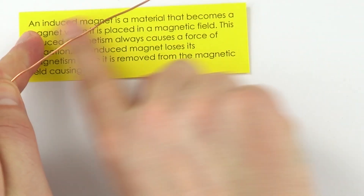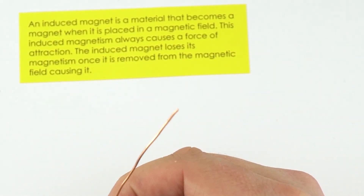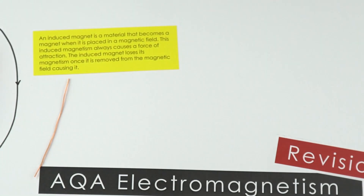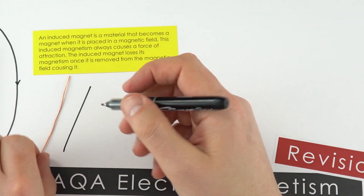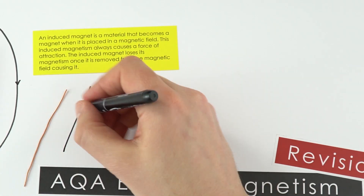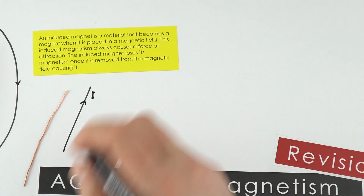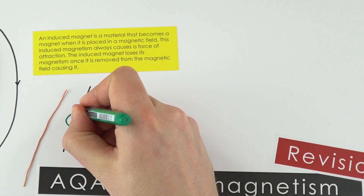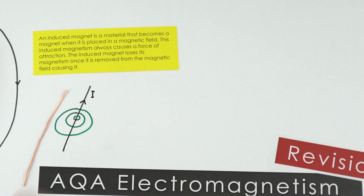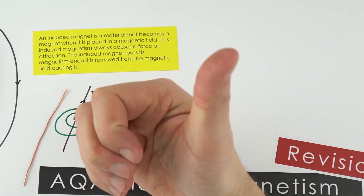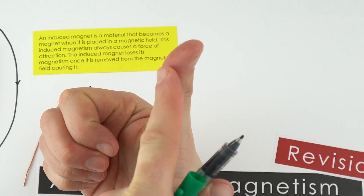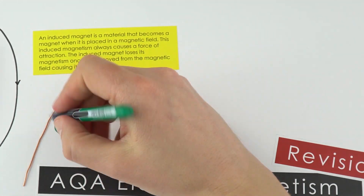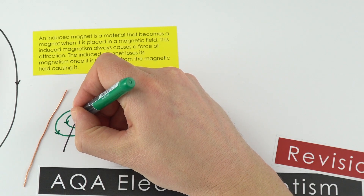Just by having a current flowing in a conductor, we have what we call an induced magnet — we have a magnetic field. If we have a conductor like this, just a wire, and the current is flowing in this direction, the field lines — which I'll draw in green — are concentric circles that get more and more widely spaced as we move out. We can think about the direction using our right-hand rule: if the thumb points in the direction of the current, the fingers point in the direction of the field.